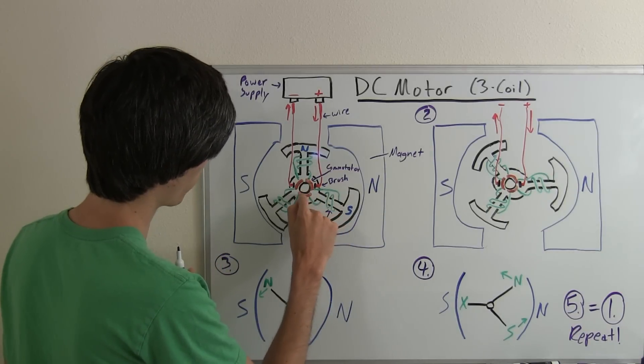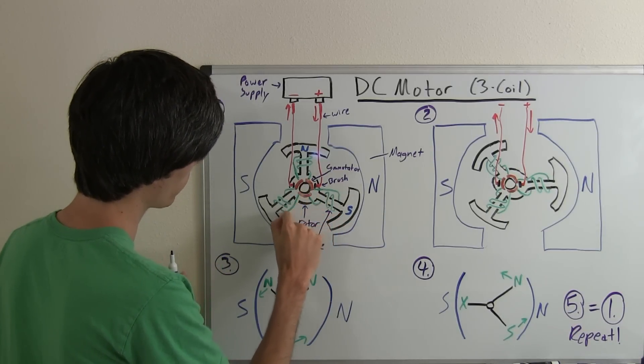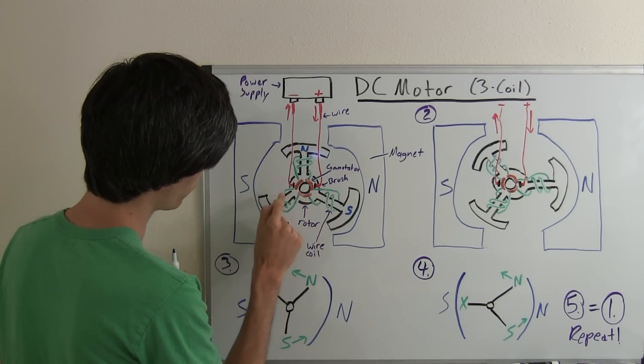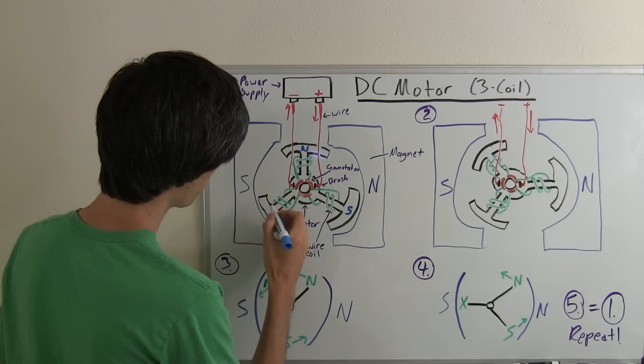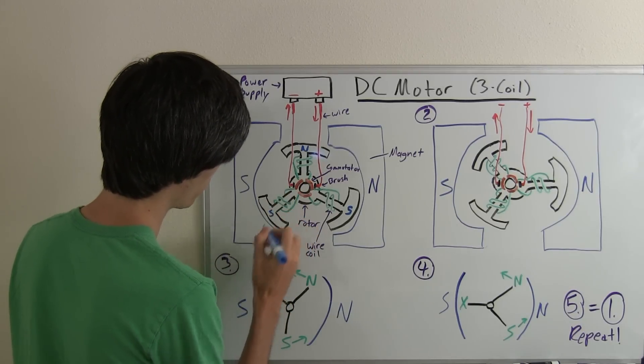Okay now it's going to travel along, that current is going to continue on and it's going to come up this armature and then go around down back to the next commutator. So then you've got another south pole there.